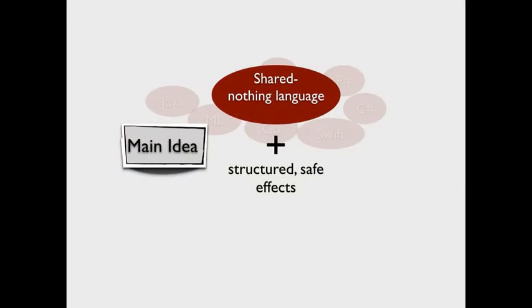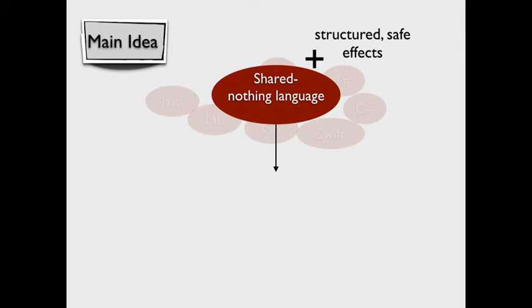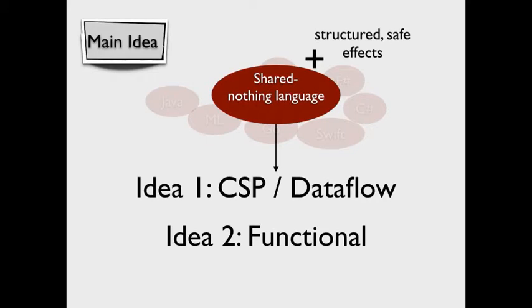So the main subject of the talk today is to take a different approach. So not to start with a language with shared mutable state, but instead start with a language where there is no shared mutable state and try to add back some of these structured safe side effects that we can use for high performance parallel programming, but which we can design by construction so as to retain determinism. And that's the main idea of this talk. So what do we pick as a starting point for a language with no shared mutable state? Well, there are really two ideas that I'm familiar with in this area. And one of them is to use a data flow or message passing type language. And the other is to start with a functional language or a functional subset of an existing language.